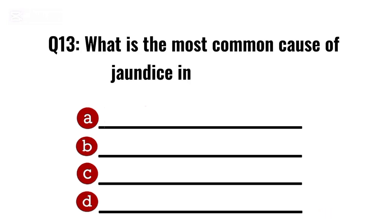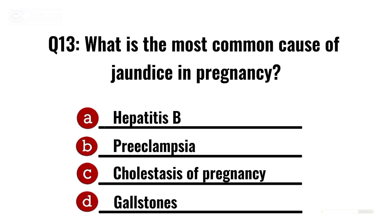Question 13. What is the most common cause of jaundice in pregnancy? Correct option C: Cholestasis of pregnancy.